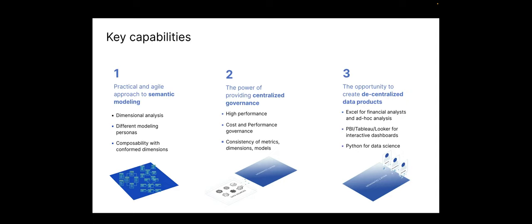Looking more closely at the key capabilities, the first is having a practical and agile approach for semantic modeling. Semantic modeling is where the application of business logic and business context happens to analytics-ready data — this is where data becomes more dimensional. Semantic modeling needs to enable different modeling personas: it could be a BI developer using a graphical user interface, or it can be done via a markup language or code-based approach so data engineers or analytics engineers can create a semantic layer or semantic model at the end of the data pipeline. The data pipeline doesn't have to end with just a table — it can end with a whole semantic model where the user creates a metric store and defines all dimensions, breakdowns, and relationships where those metrics can be analyzed in a governed manner.